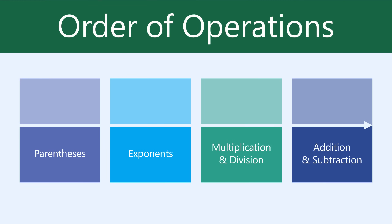When solving formulas, Excel uses a set of rules called the order of operations, which you might remember from math class. The order of operations determines the order in which the formula will be calculated, so you know exactly how to write it out.